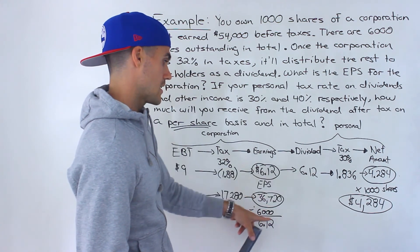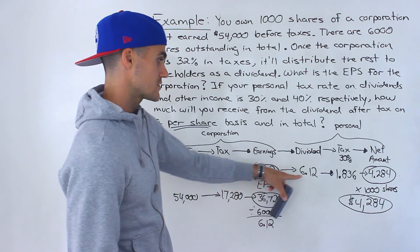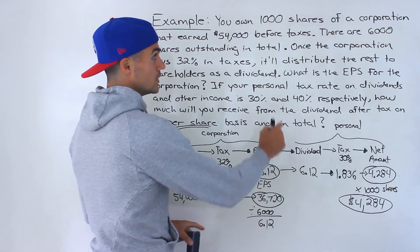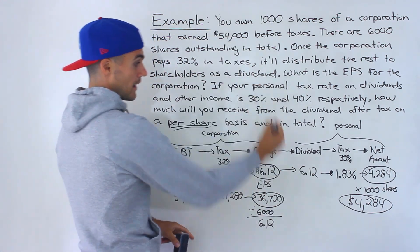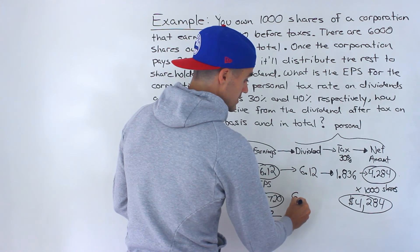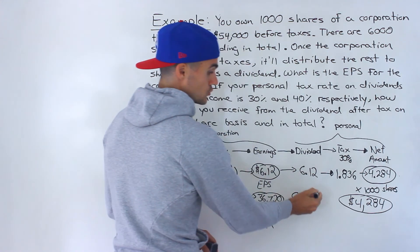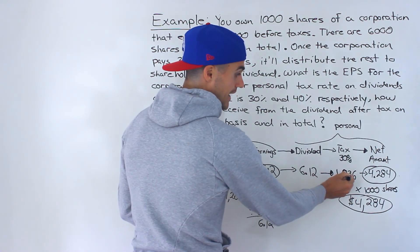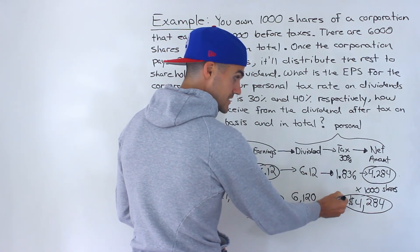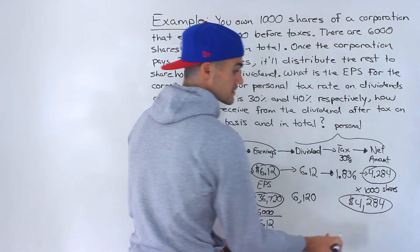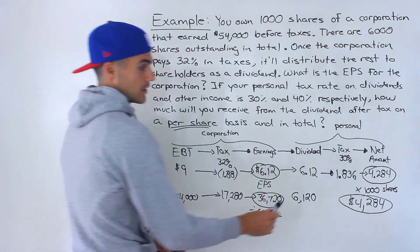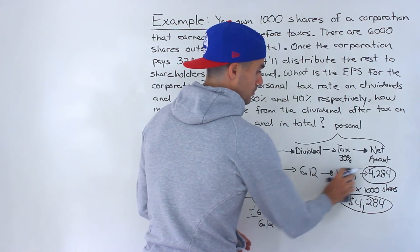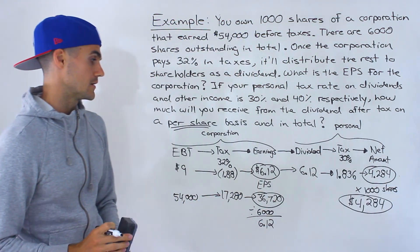Another way you could have done this: they're paying $6.12 per share as a dividend, so you could multiply that by your 1,000 shares to get $6,120 — that's how much you'd receive as a dividend total. Then you'd pay $1,836 in taxes to get that $4,284. Because they asked for the per share basis as well, I just kept it per share and multiplied by 1,000 at the end.